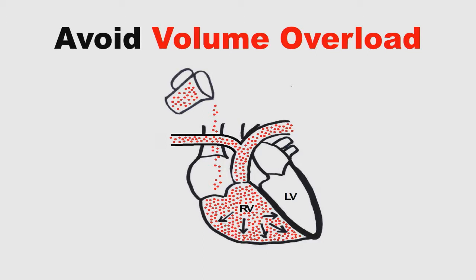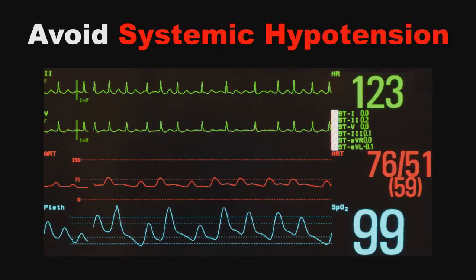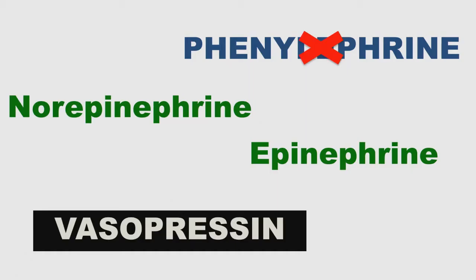Next, you want to avoid systemic hypotension. Hypotension promotes RV ischemia and tips off the cycle of failure. And because of the problem giving volume to these patients, have a low threshold to start vasopressors early in their management. Phenylephrine is the wrong choice in RV failure — it's a non-selective vasoconstrictor and acts on the pulmonary vasculature and increases RV afterload. Norepinephrine and epinephrine are both reasonable options. And vasopressin is a vasoconstrictor that spares the pulmonary vasculature and is an interesting option if you're comfortable with this agent.